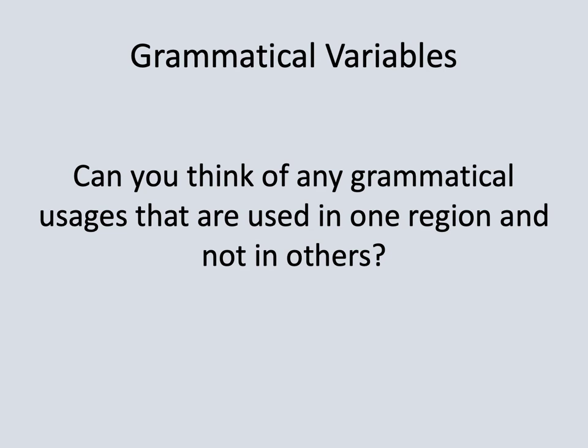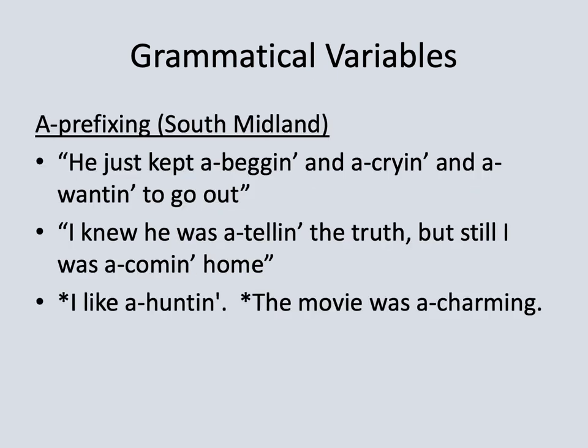Turning to a couple of grammatical features, it's actually a little bit more difficult to think of grammatical usages that vary by dialect region. We can think of lots of grammatical usages like double negatives, but those don't really vary by region — they're found all over the English-speaking world and may vary by social class rather than region. One that is familiar is a-prefixing, found in the South Midland and particularly associated with Appalachian English, occurring in sentences like: he just kept a-begging and a-crying and a-wanting to go out, or I knew he was a-telling the truth.